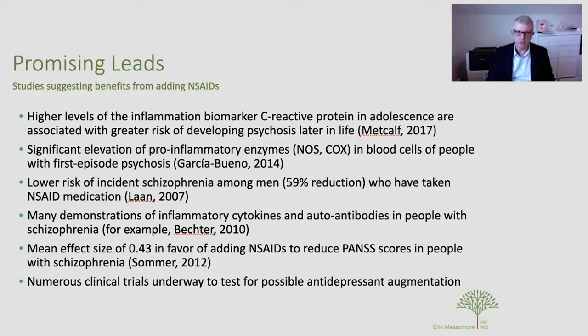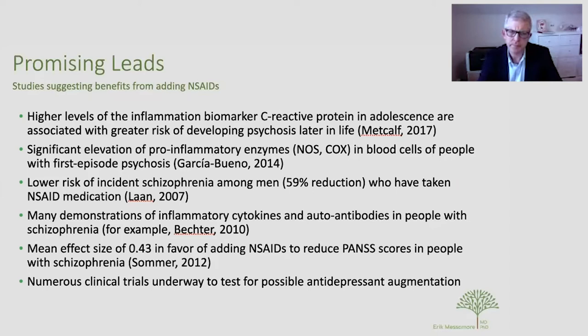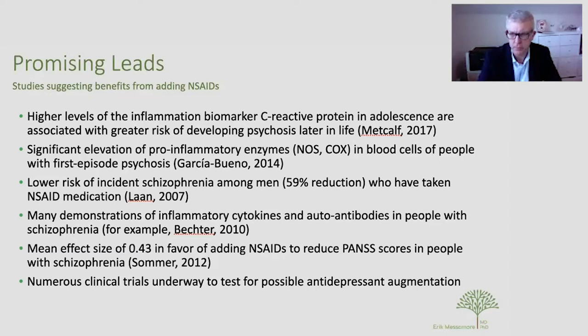If you look at people already within a first episode of psychosis, inflammatory processes are on average revved up. Two enzymes — NOS (nitric oxide synthase) and COX (cyclooxygenase) — are elevated on average in the peripheral blood cells of people with first-episode psychosis. An interesting epidemiological study from Scandinavia showed that among all individuals studied, those who had taken an NSAID in the past were less likely to wind up with a diagnosis of schizophrenia, with a nearly 62 percent reduction in risk among men.